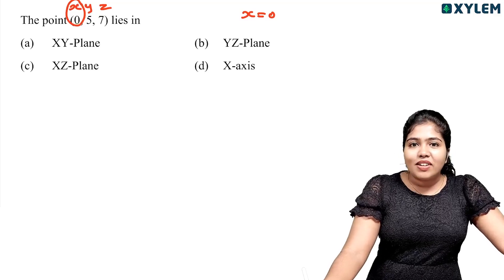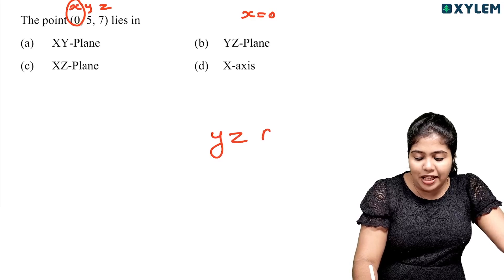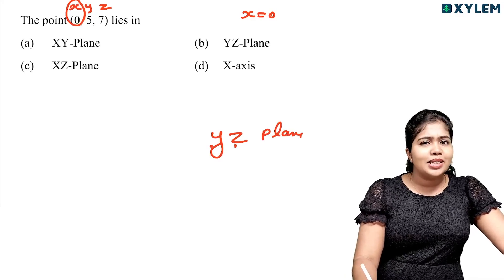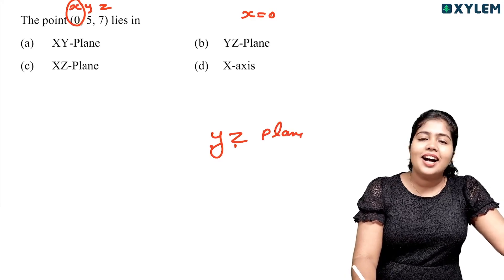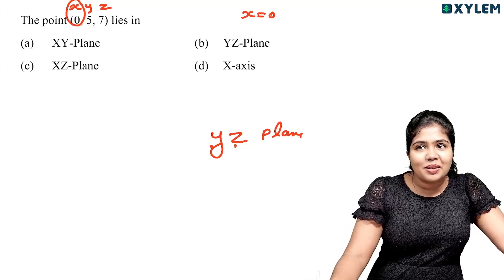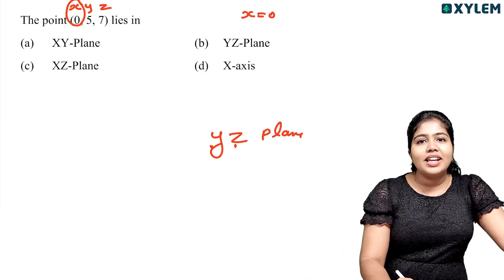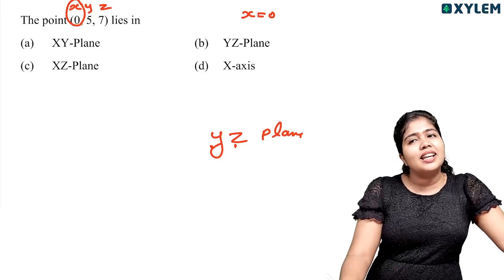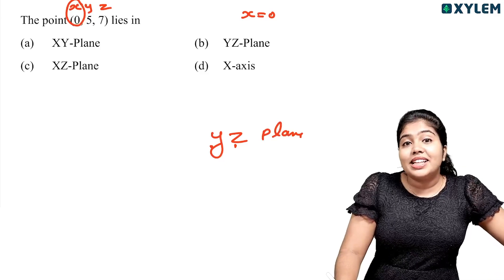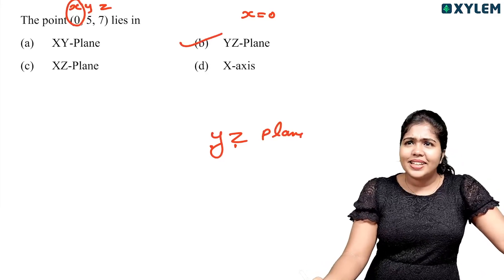The main thing is: if x is 0, then the point lies in the YZ plane. So the answer is the YZ plane. It's very simple — this is good for one mark.